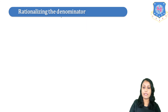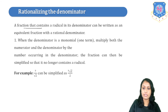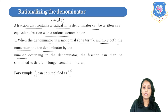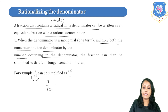Now let's study rationalizing the denominator. A fraction that contains a radical (surd) in its denominator can be written as an equivalent fraction with a rational denominator. When the denominator is a monomial (one term), multiply both numerator and denominator by the number occurring in the denominator. Our task is to remove the surd from the denominator. For example, √2 into √2 gives 2, and the numerator becomes 7√2. This is the method to rationalize the denominator.